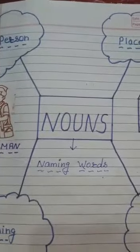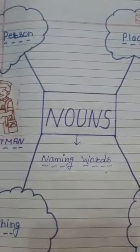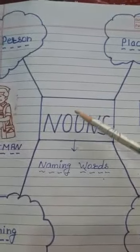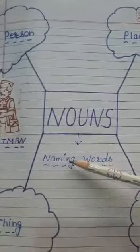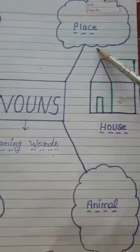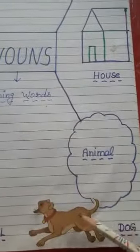Hello students, I welcome you all in your English online class. Students, we are continuing with the topic nouns. Nouns relate to naming words of person, of place, of thing and of animal. So, we are going to go through the kinds of nouns.